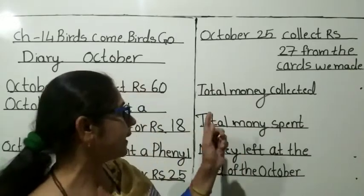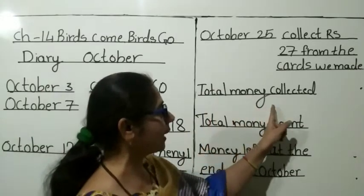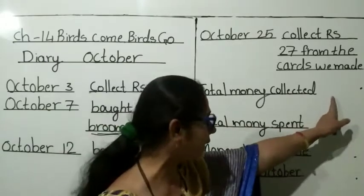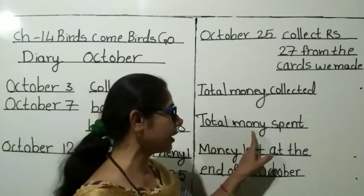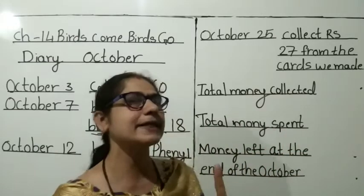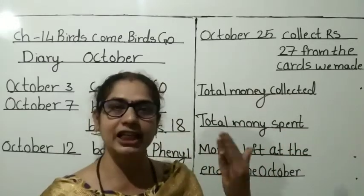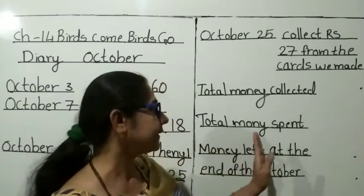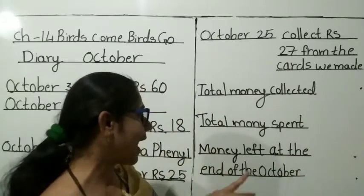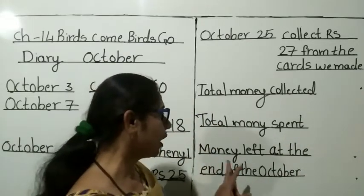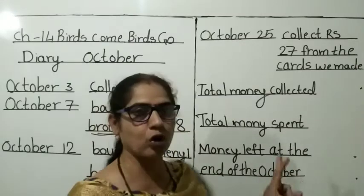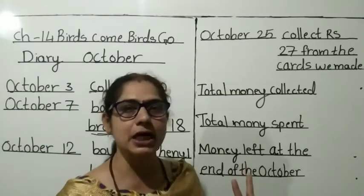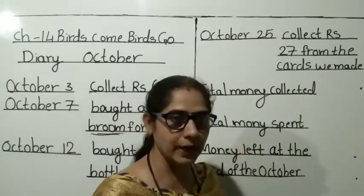What do you have to do? See here — total money collected, kitne money collect kiya, that you have to write here. Then total money spent — S-P-E-N-T — means chizen liya hai, things liya hai, kitne paisa spend kiya hai, that you have to write here. Then, money left at the end of October — last month, money kitna bacha hua hai.